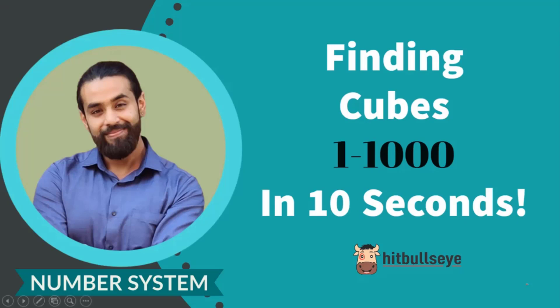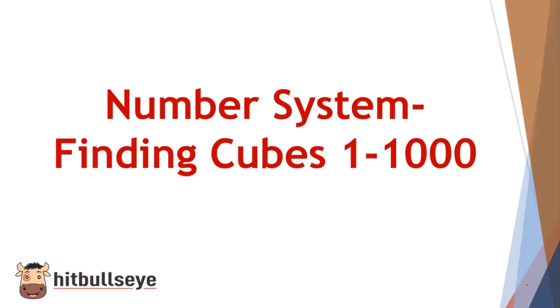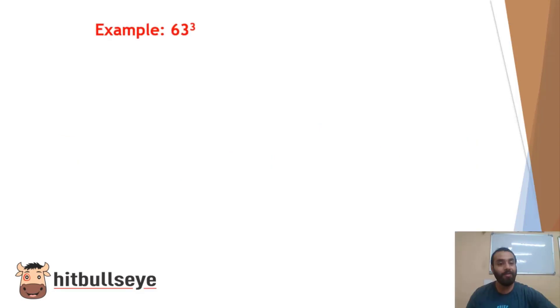Hello students, welcome back to another video at Hitbullseye. Today's topic will be finding the cubes from 1 to 1000 in number system or Vedic Maths. This topic was asked by so many students, I was getting many messages on YouTube as well as on Telegram. Here we go. We take an example as 63 raised to the power 3. Solving it conventionally in your exam, you will get to the answer as 250,047 after at least two minutes minimum.